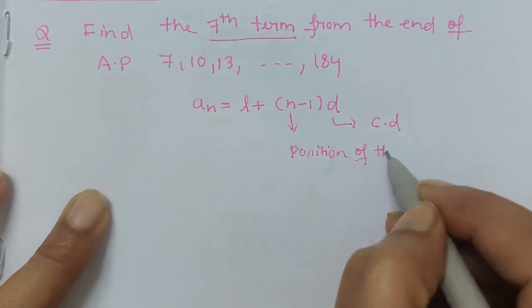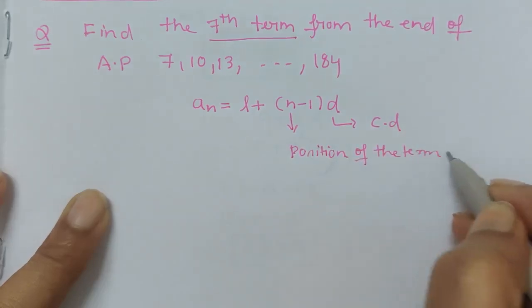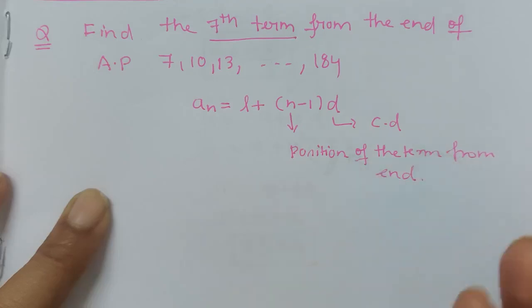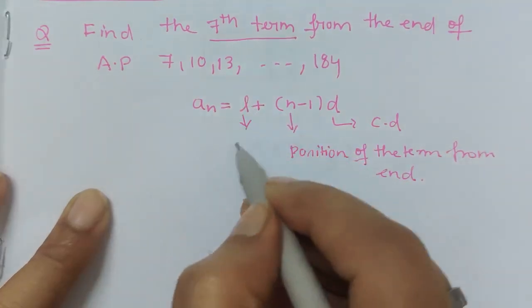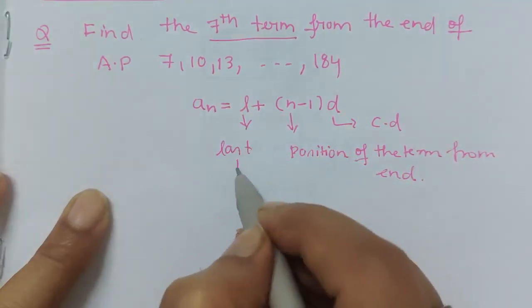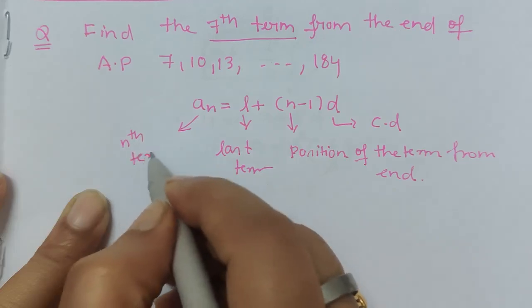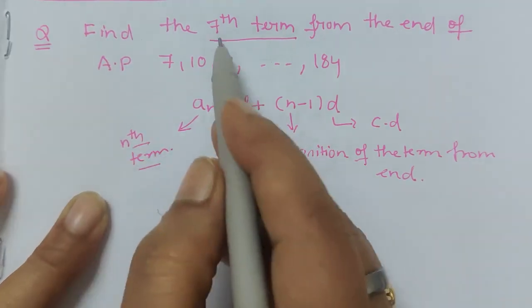Position of the term from the end, because this problem is to be calculated from the end. L is the last term and aₙ is the nth term which we are talking about.